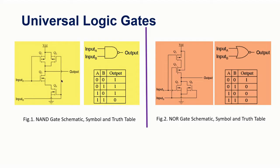Before going to the designing and demo part, let us know the basics of two available universal logic gates. The first one is the NAND gate schematic and the second one is the NOR gate schematic. If you see closely the difference between the NAND gate and NOR gate, you can easily visualize Q1 and Q2 — that is PMOS in parallel — and Q3, Q4 — that is NMOS in series. But in the case of the NOR gate, Q1 and Q2 are PMOS in series, and Q3, Q4 are NMOS in parallel.